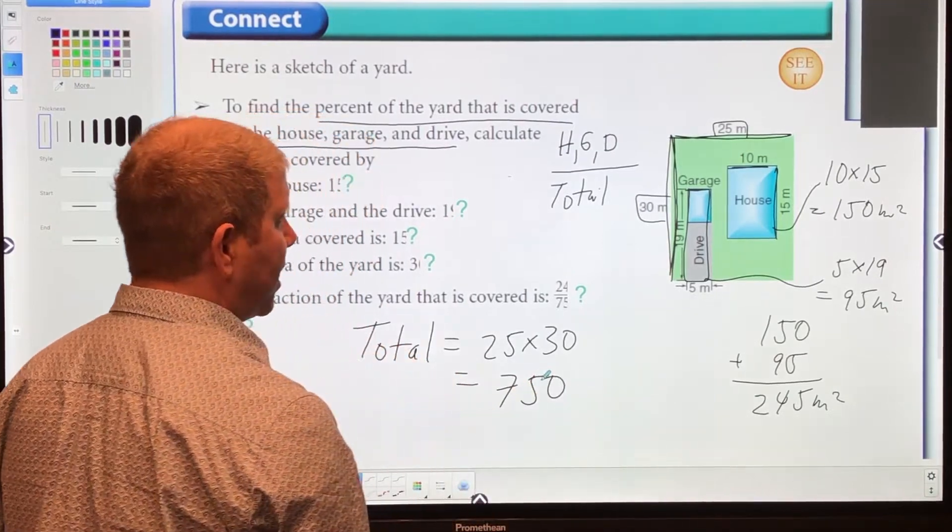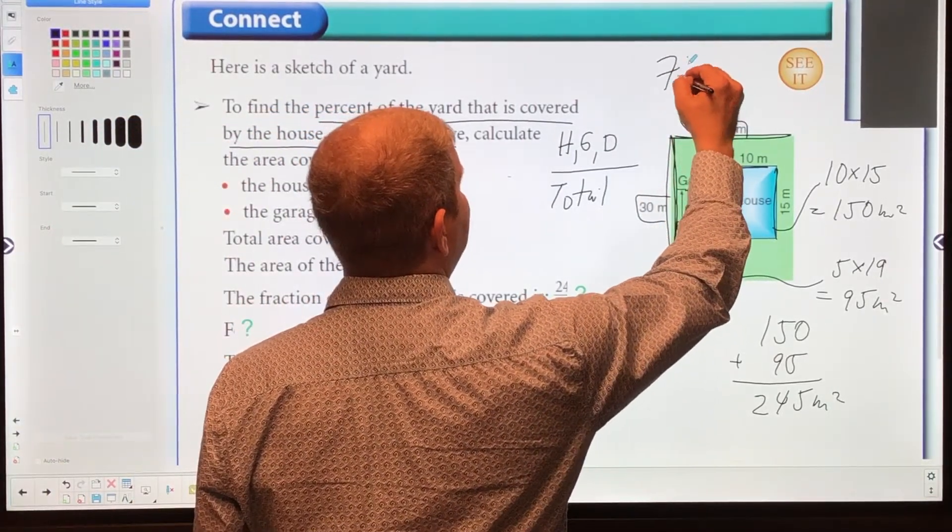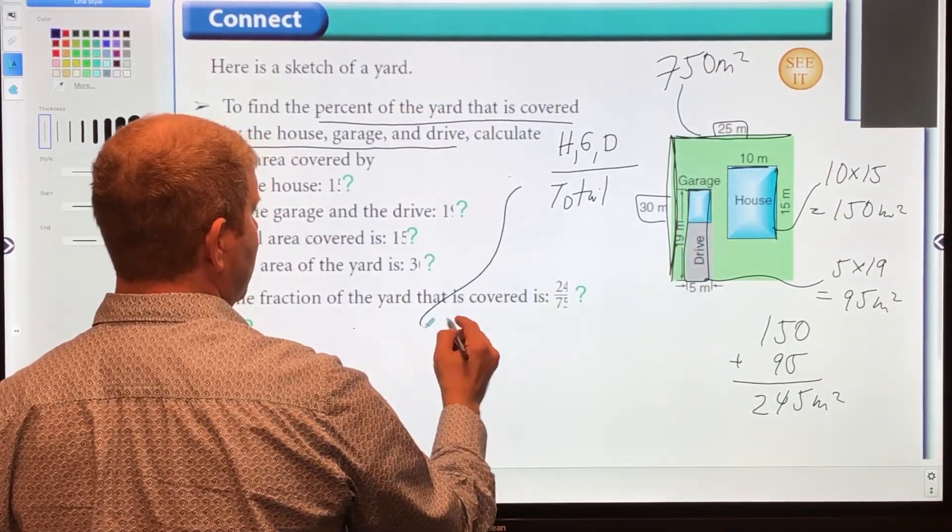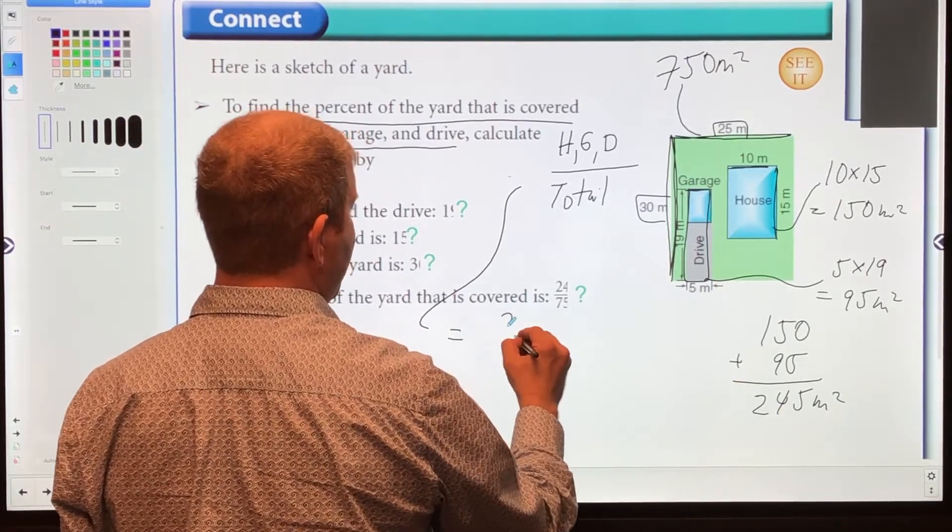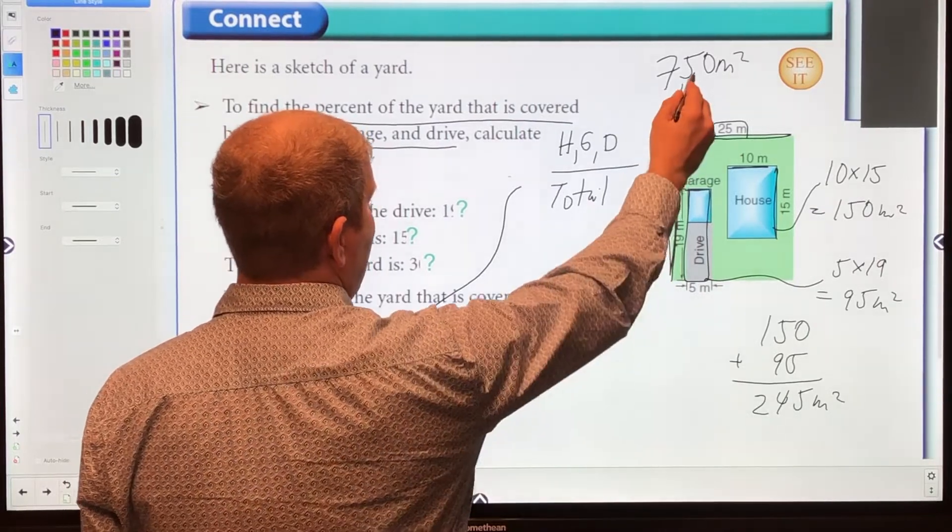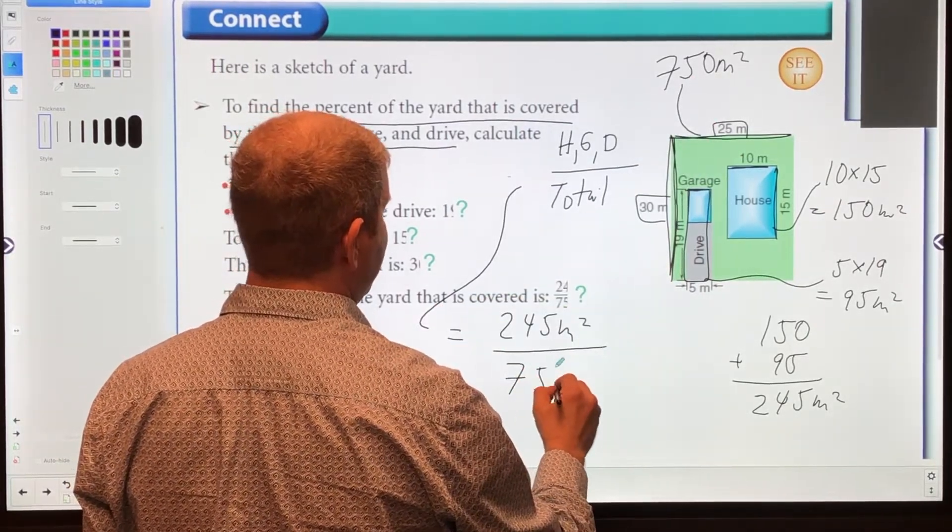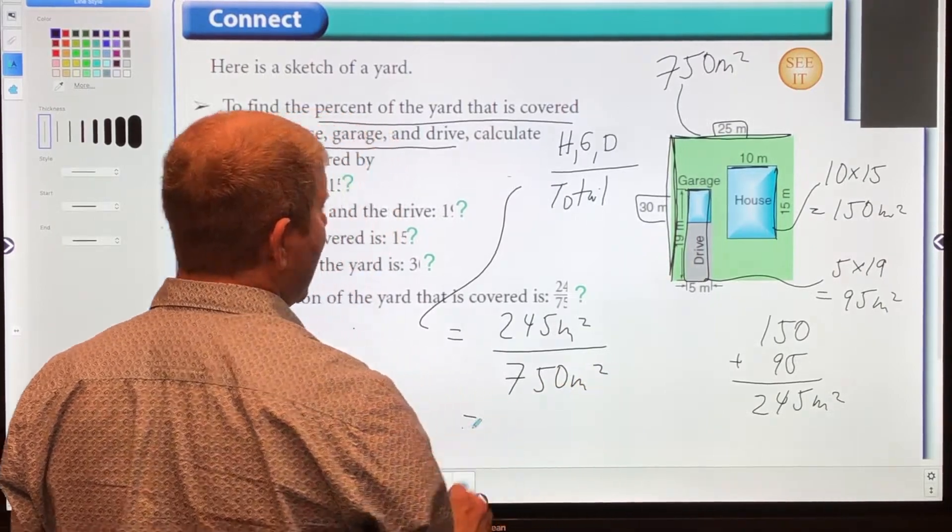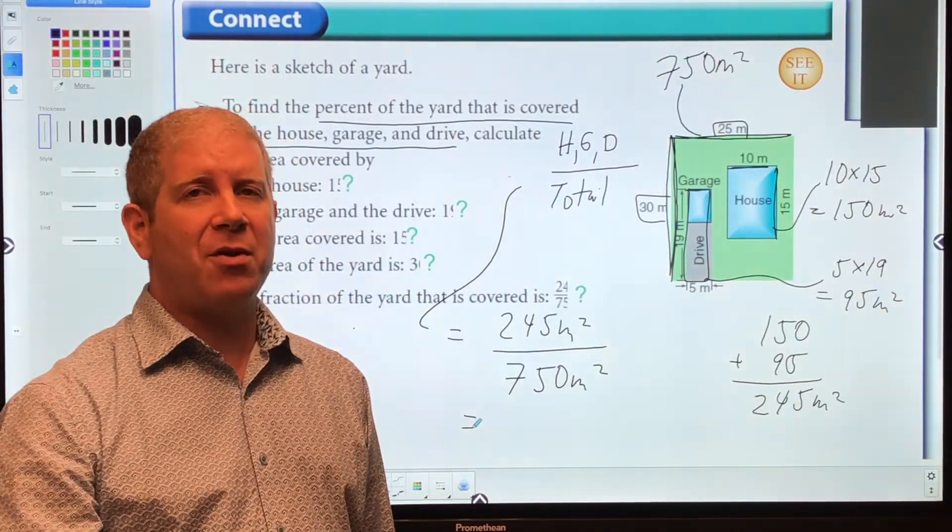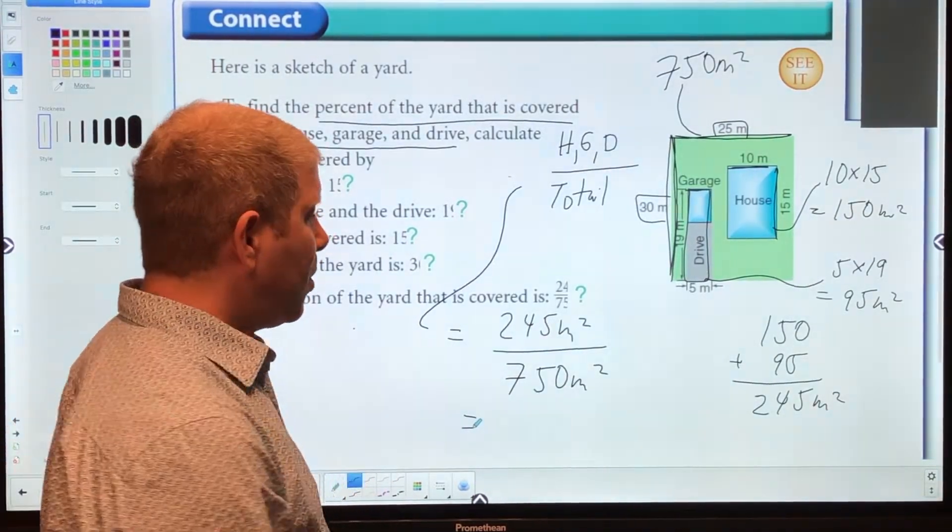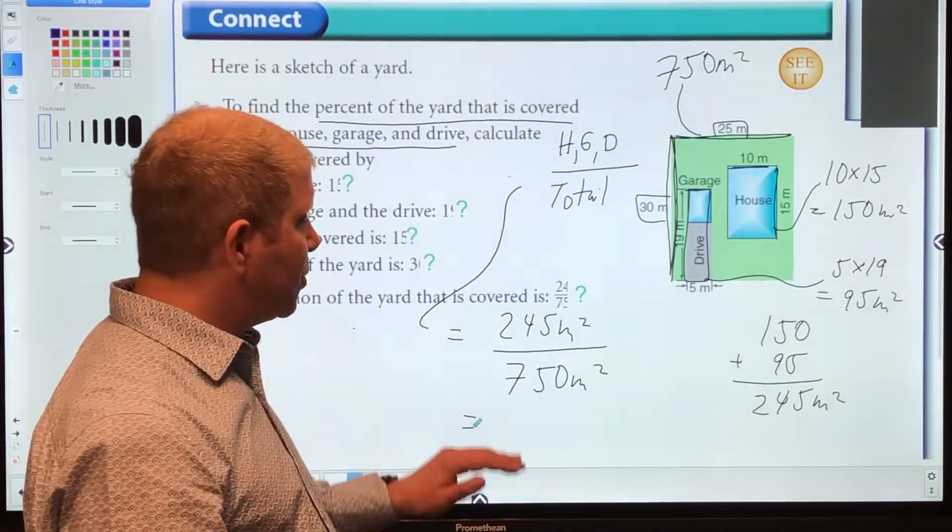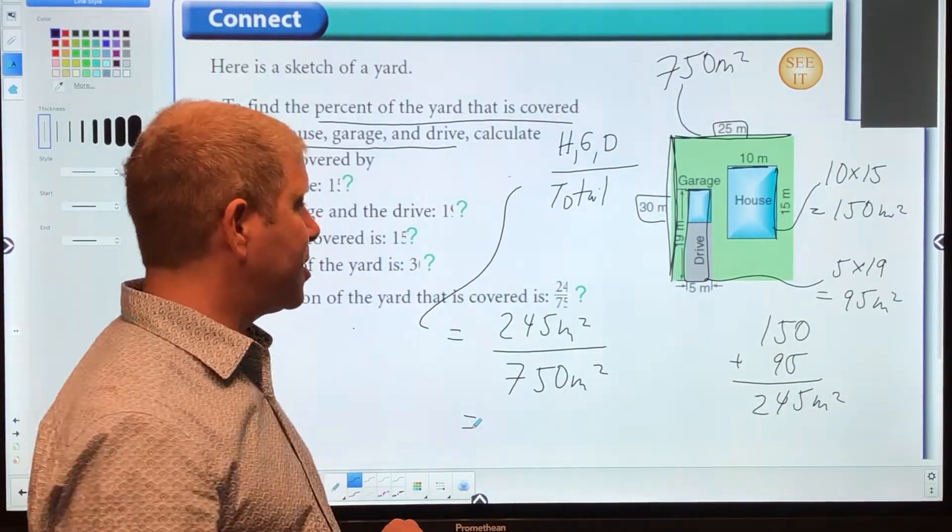Now we can plug in our numbers. Our total area is 750 meters squared. We have 245 meters squared for house, garage, and drive, divided by 750 meters squared total. You could use a calculator to do 245 divided by 750, but we want to stick with fractions and use mental math.